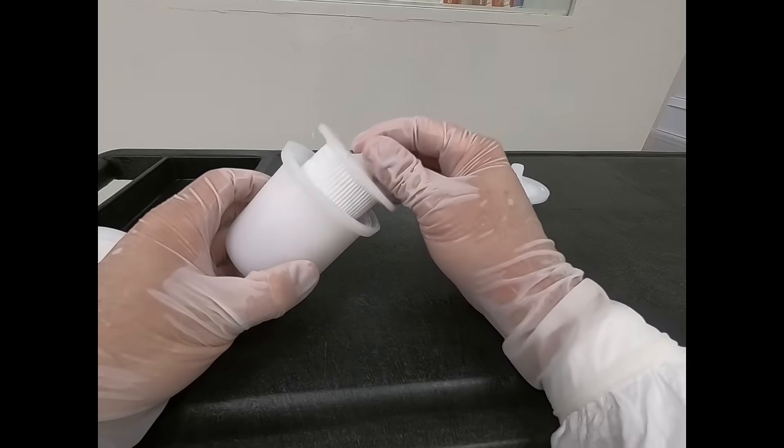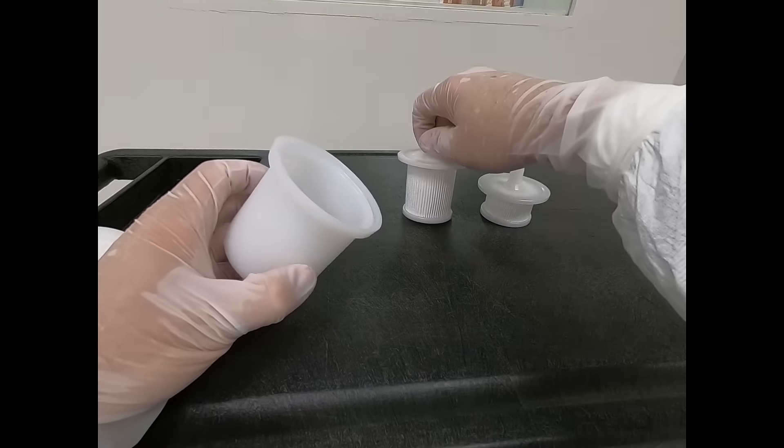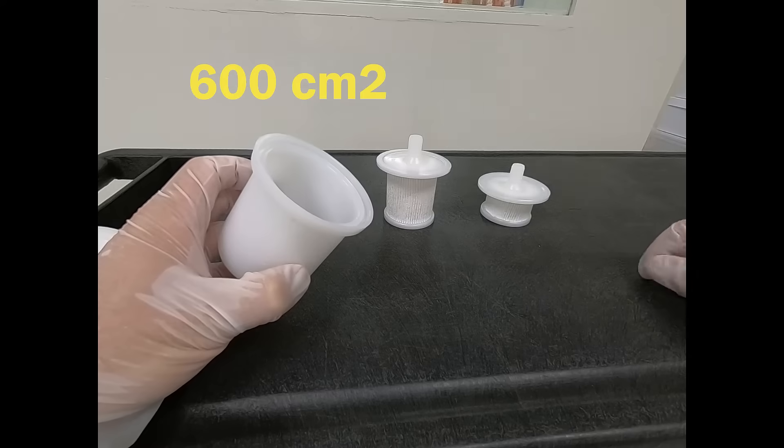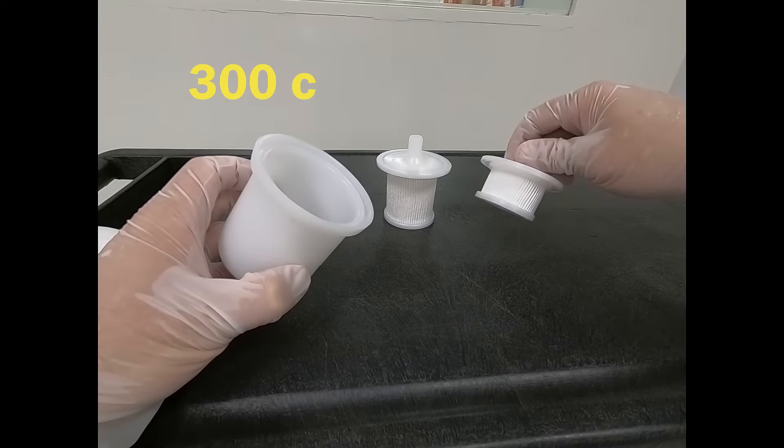Watera filters are produced in two sizes. We make a high capacity filter with 600 square centimeters of media and a medium capacity filter with 300 square centimeters.